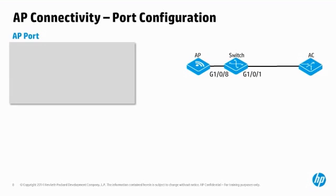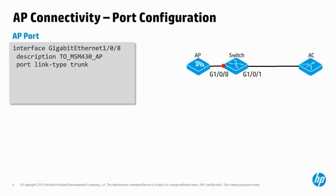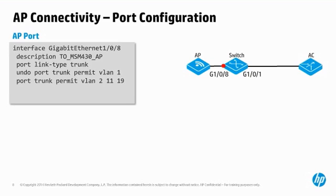You must ensure that all AP-connected switchports are properly configured. In a typical scenario, the port link type is set to Hybrid or Trunk mode to allow multiple VLAN support. For example, the AC to AP communication may occur on VLAN 2, one SSID mapped to VLAN 19, while another is mapped to VLAN 11. These VLANs must all be supported on the AP-attached switchport. To avoid unnecessary traffic, only the VLANs actually needed should be enabled on the port. Since VLAN 2 is being used as a kind of management VLAN, you may want to make this an untagged VLAN. Finally, PoE should be enabled on the port so the AP can power up.